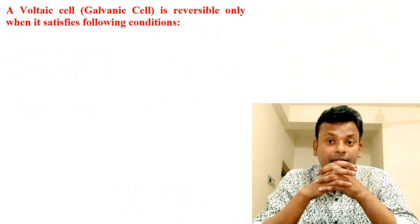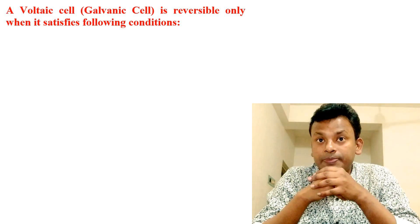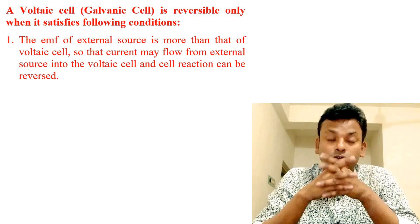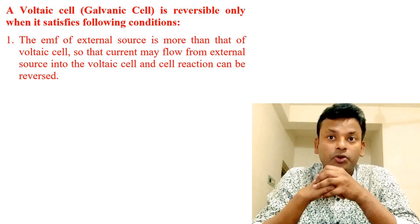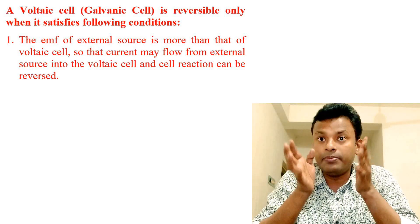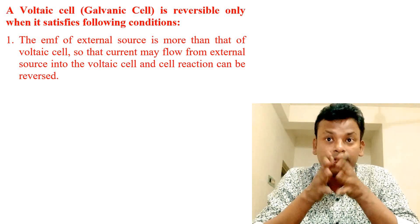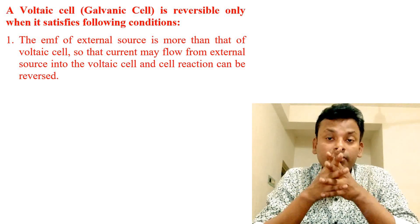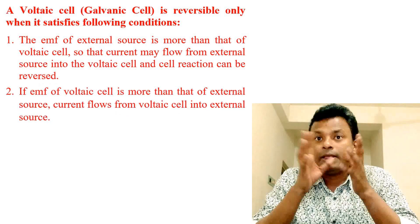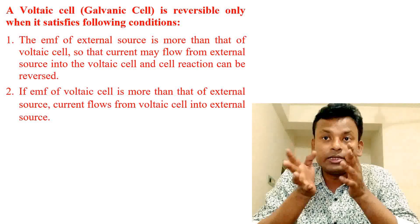A voltaic (galvanic) cell is reversible only when it satisfies the following conditions. First, the EMF of the external source is more than that of the voltaic cell, so that current may flow from the external source into the voltaic cell and the cell reaction can be reversed. Second, if the EMF of the voltaic cell is more than that of the external source, current flows from the voltaic cell into the external source.